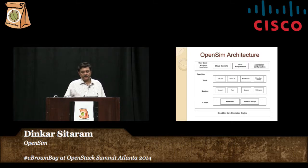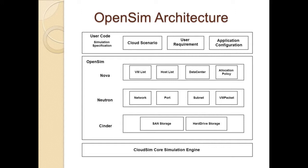As a brief overview of the OpenSim architecture, there are three layers. At the top is the user workload layer, which describes what the user workload looks like and what applications they're running. Then there is the OpenSim layer itself — in the Nova part we simulate the VMs, the physical nodes, and the VM scheduling. In the networking part we simulate network and IP addressing. In Cinder we simulate both block storage and SAN storage. Underlying all of that is CloudSim, a simulation package developed by the University of Melbourne under Professor Booyah, which is the basis for the OpenSim simulator.